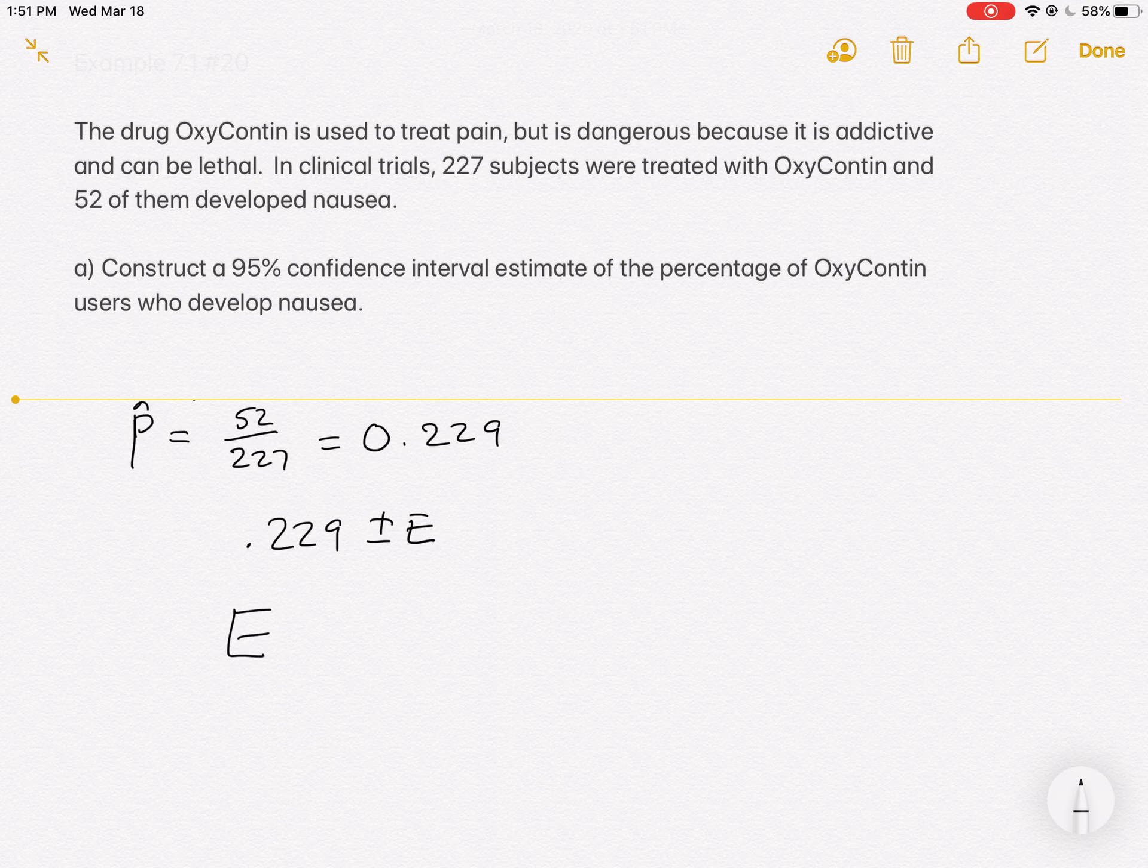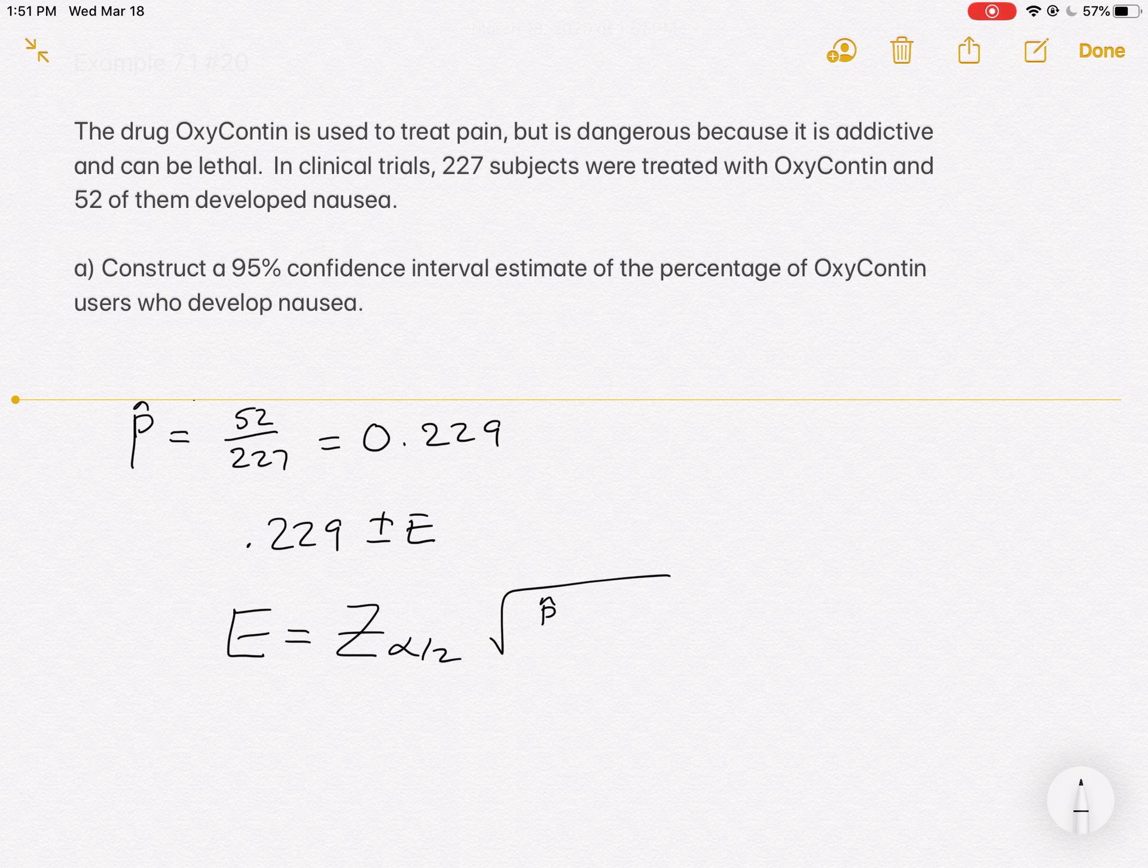So you know what we have to do maybe by now. We've got to use this formula to come up with the error. So I'll briefly write it down. And let's fill in what we know. Now, how are we going to get the Z alpha over 2?